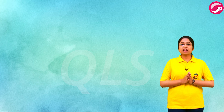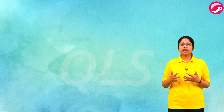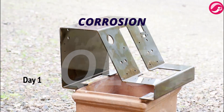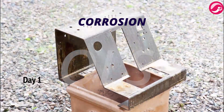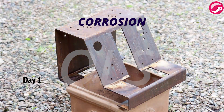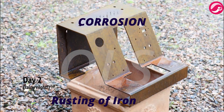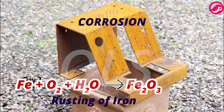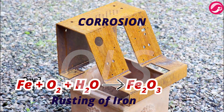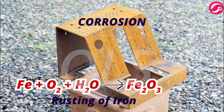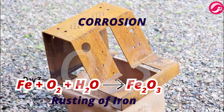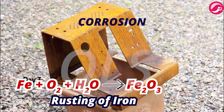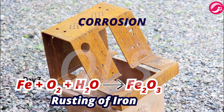Chemical reactions are not always beneficial; some reactions can also cause distress in our daily life. One such reaction is corrosion. When iron objects are left out in the open, their shiny surface becomes reddish-brown — this is rust. When iron (Fe) reacts with oxygen and water (H₂O) it produces Fe₂O₃, which is iron oxide (rust). This process is known as rusting of iron.